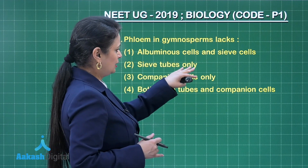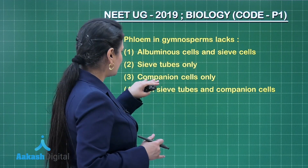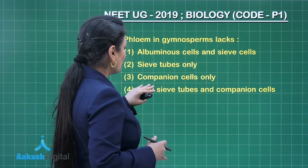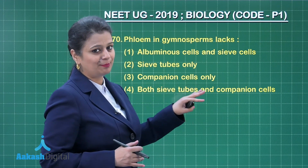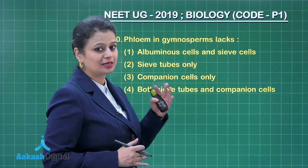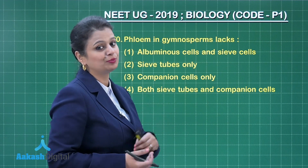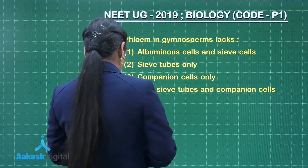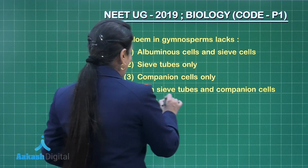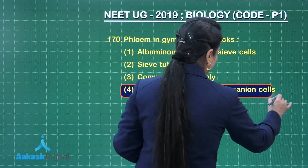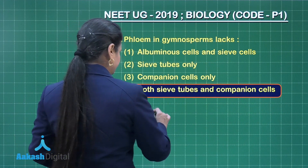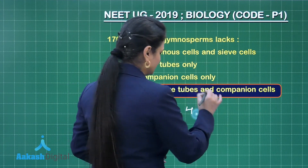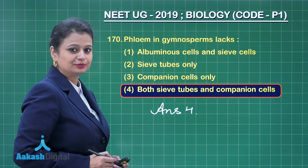Sieve tubes only — they are absent, so that's not the scenario. Companion cells only — no. Both sieve tubes and companion cells are not found in gymnosperms; rather they are seen in angiosperms. So the right answer here is option number four.